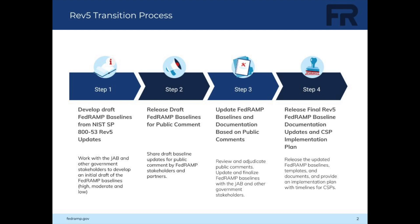Finally, in Step 4, FedRAMP will release the Rev.5 FedRAMP baseline documentation updates and a CSP implementation plan. This release will include the final version of the FedRAMP updated baselines, including the OSCAL versions, associated documentation and templates, and an implementation guide identifying the compliance timeline. The implementation timeline is dependent on the NIST release of the final updated version of SP 800-53A, Assessing Security and Privacy Controls in Federal Information Systems and Organizations: Building Effective Assessment Plans.